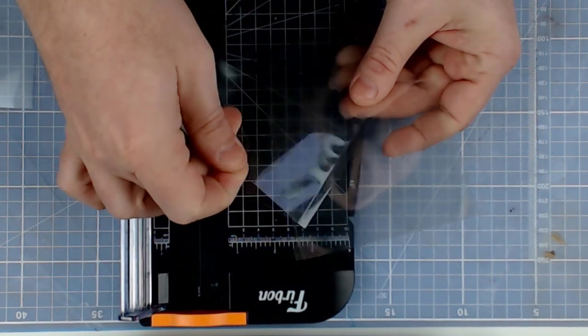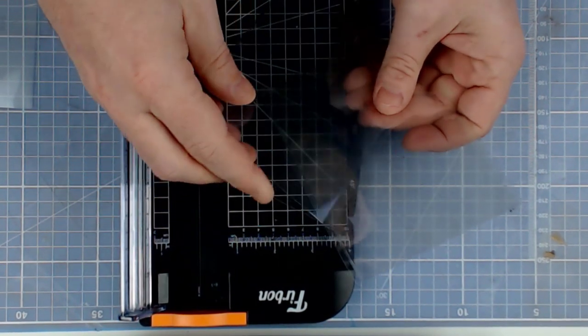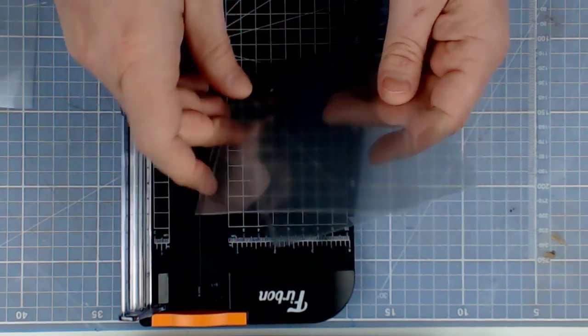And there we go. That is my first two pockets. And you can see, because I trimmed across the top, it has opened up that air pocket.